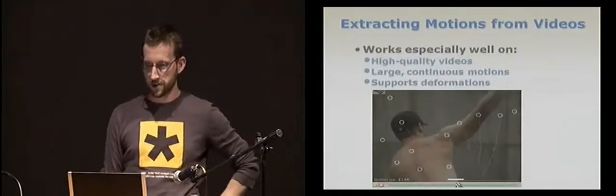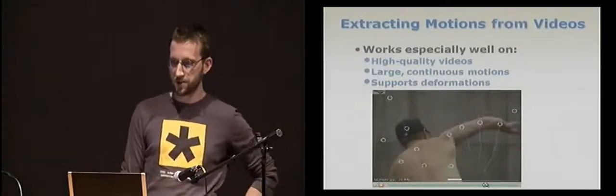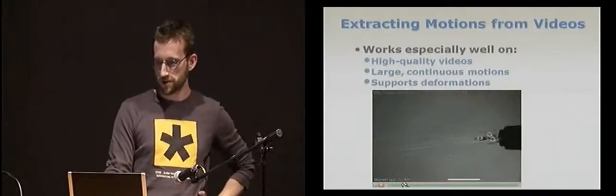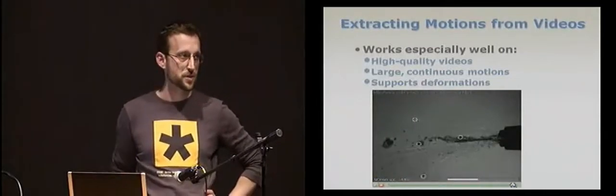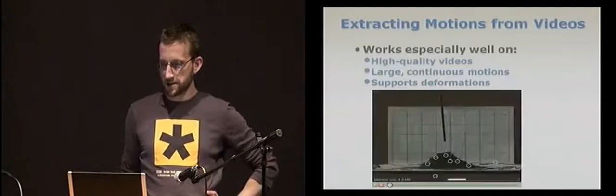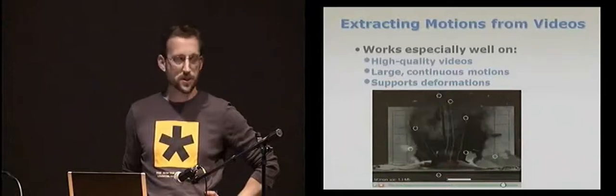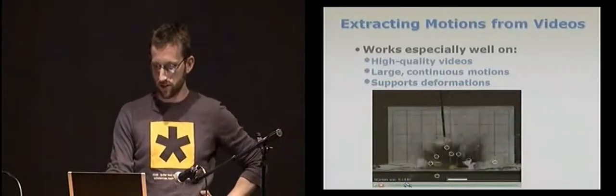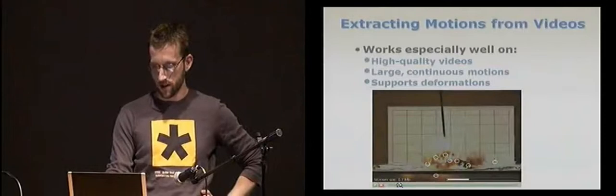So this is an approach which works very well, especially on high-quality videos, with large and continuous motions. So here what you see are not features, they're just some arbitrary points I've decided to track, and the nice thing with optical flow is that it supports deformations, very complicated motions, which are difficult to track with using object tracking approaches. Of course there are some limitations. One is that when an object is occluded, such as the left guy here, the system will lose track of this object, which suggests that the best approach is probably a combination of object tracking and optical flow. That's for future work.